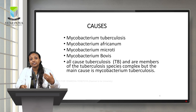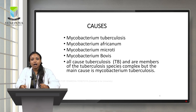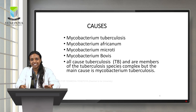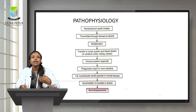Other causes for pulmonary tuberculosis, besides Mycobacterium tuberculosis, include Mycobacterium africanum, Mycobacterium microti, and Mycobacterium bovis. All cause tuberculosis and are members of the tuberculosis species complex, but the main cause is Mycobacterium tuberculosis.